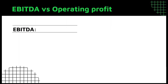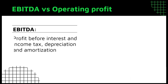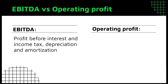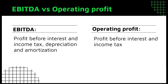A common question I get asked is: what is the difference between EBITDA and operating profit? Both are measures of a company's profitability. EBITDA is the profit before interest, income tax, depreciation, and amortization, while operating profit is the profit before interest and income tax only.